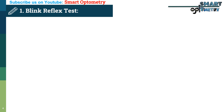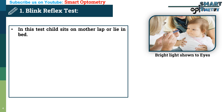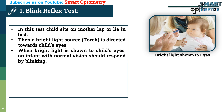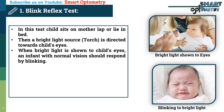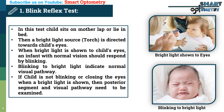Blink reflex test: In this test, the child sits on the mother's lap or lies in bed. A bright light source is directed towards the child's eyes. When bright light is shown to the child's eyes, an infant with normal vision should respond by blinking. Blinking to bright light indicates a normal visual pathway. If the child is not blinking or closing their eyes when a bright light is shown, then the posterior segment and visual pathway need to be examined.